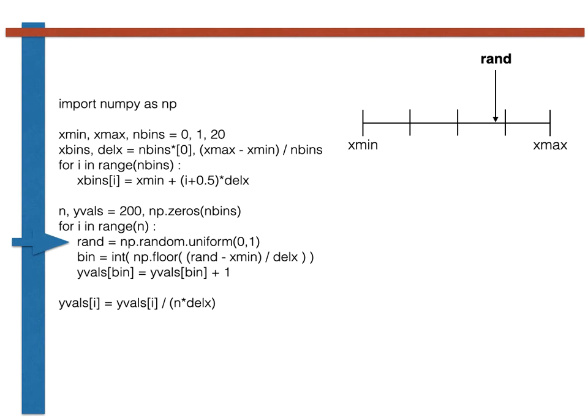The first line generates a random variable that will lie in somewhere in the range between xmin and xmax. Let's say that the value of the random variable is here. The second line, the one with the npfloor command, then transforms rand so that bin has a value which, if it is multiplied by delx and added to xmin, would fall here.